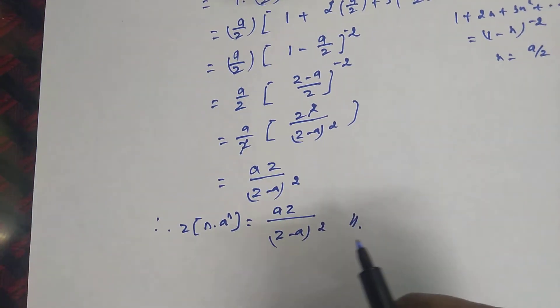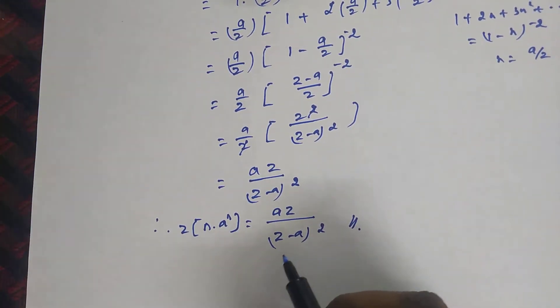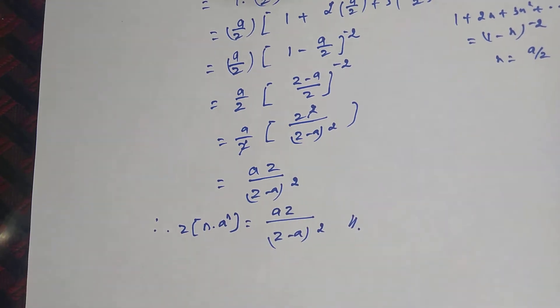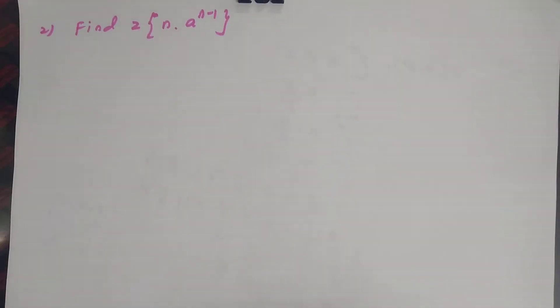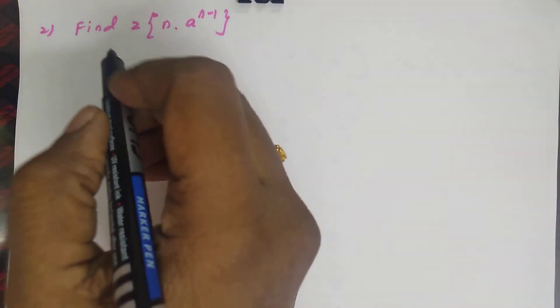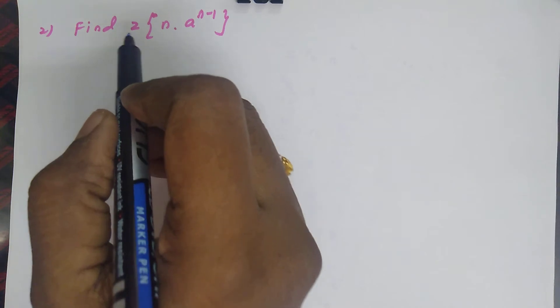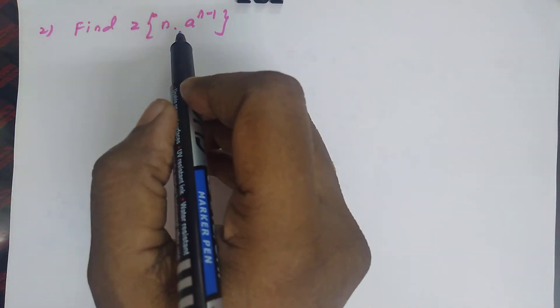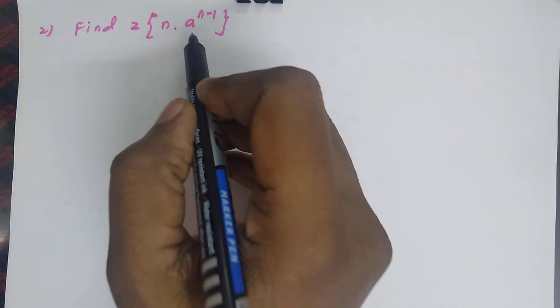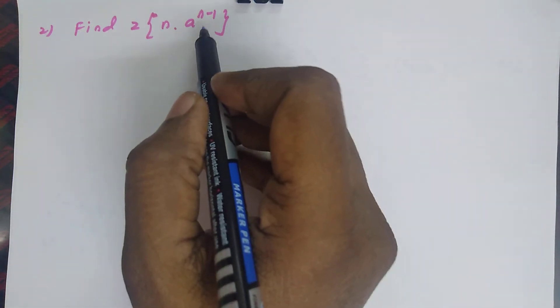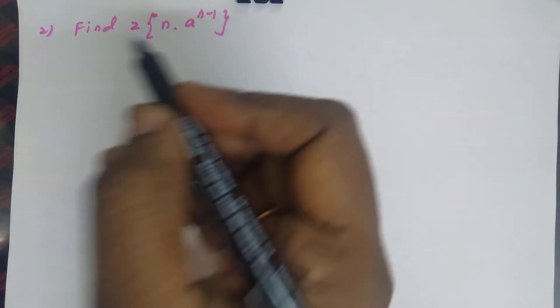This is the answer for the sequence n into a power n. Now look at the second question: find the Z-transform of sequence n into a power n minus 1.